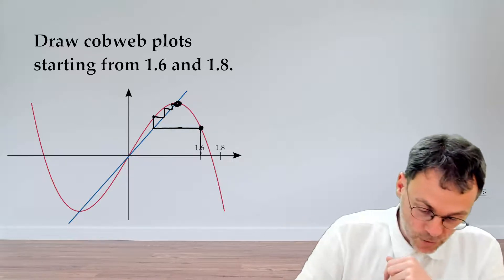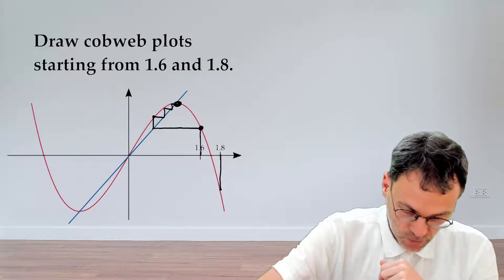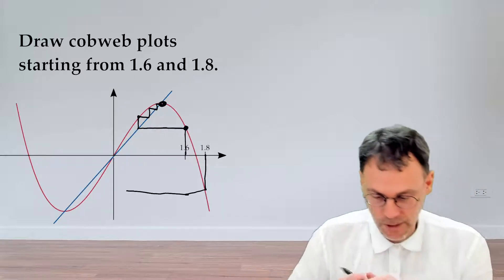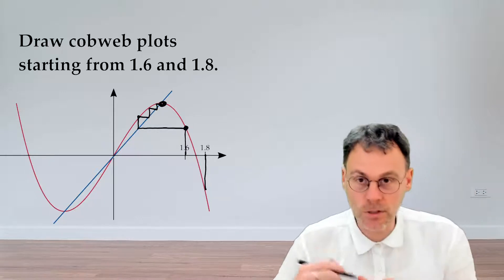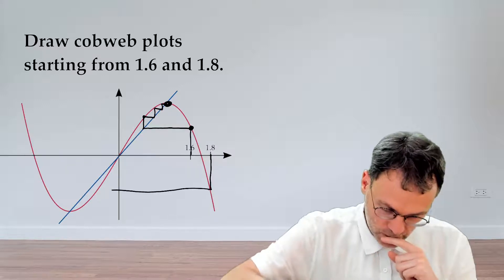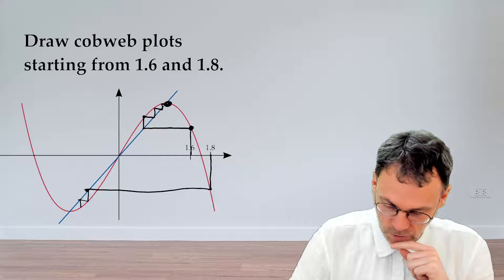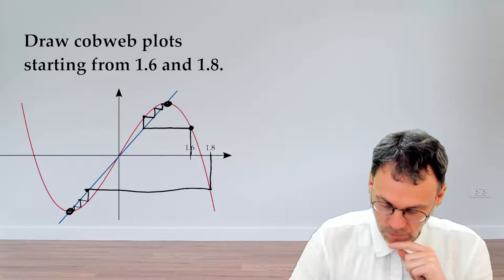Let's do the same thing with 1.8. First we go to f of x, going straight or more or less straight. Then we go straight to the line y equals x. We keep iterating that function until we finally end up over here.